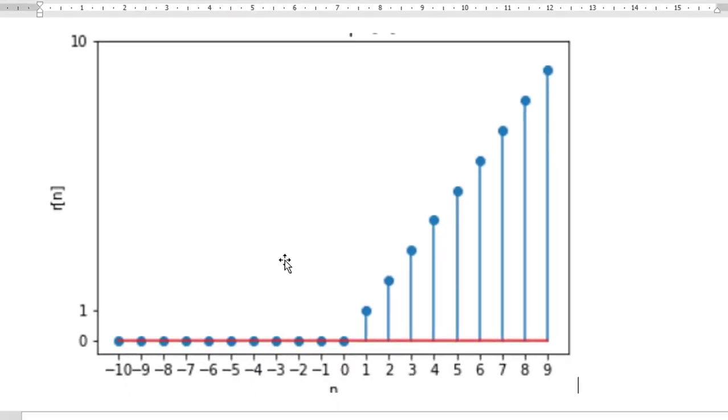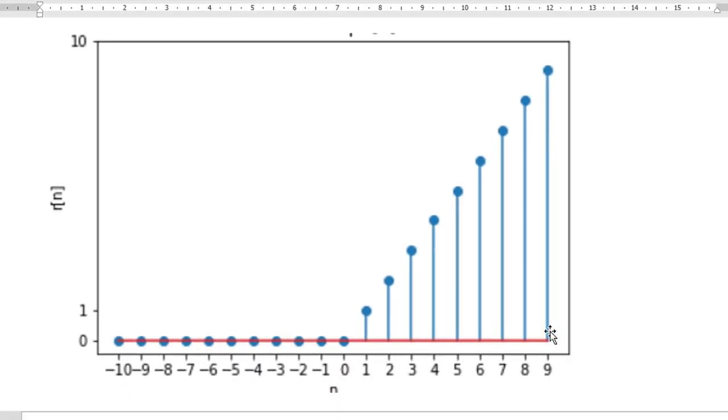As we all know, unit ramp function is defined for n greater than or equal to 0. For n less than 0, it is completely 0. When n equals 0, it is 0. When n equals 1, it is 1. When n equals 2, amplitude is 2. When n equals 3, amplitude is 3, and so on. It goes on till n equals infinity.